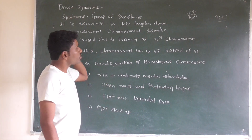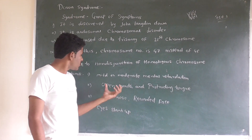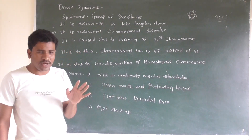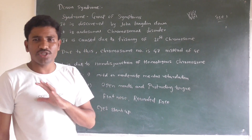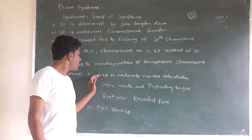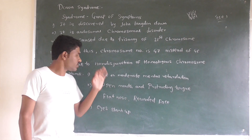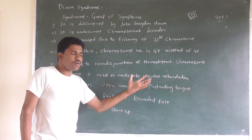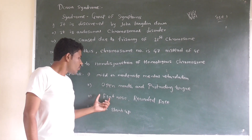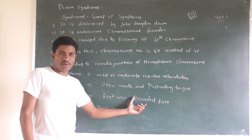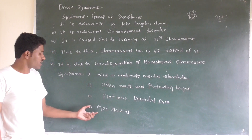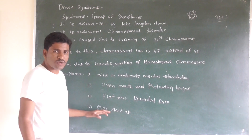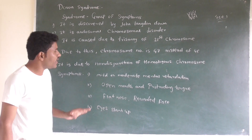Down syndrome is characterized by mild to moderate mental retardation. Physical symptoms include an open mouth, protruding tongue, flat nose, rounded face, and slanting eyes. There may also be respiratory problems. These are the characteristic features of Down syndrome.